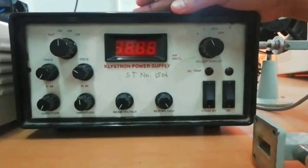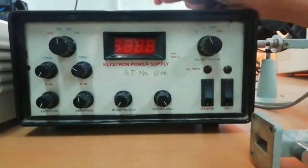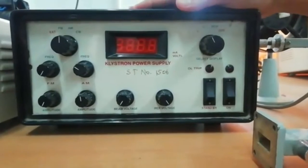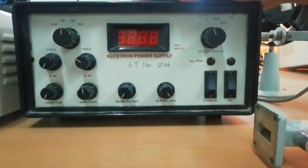Provision is given to vary the repeller voltage continuously from minus 270 volts DC to minus 10 volts. An external modulation may be used through the UHF connector provided on the front panel.